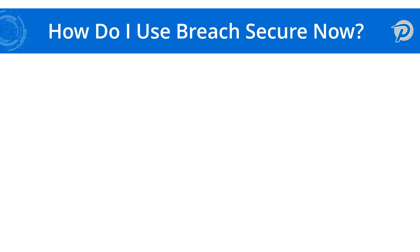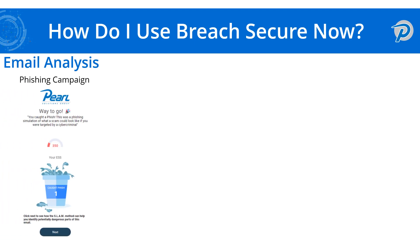Now let's get into the functionality of each of these buttons, the first one being email analysis. The email analysis button is there for you to click on anytime you get an email in your inbox that you are unsure of the legitimacy of. When you click this button, the first thing it's going to do is notify you whether or not the email was part of our phishing campaign. If it's part of our campaign and you click the email analysis button, you'll get a box that shows up saying you caught a fish — this was part of our phishing simulation, there's nothing else you need to do. You can delete that email and move on.